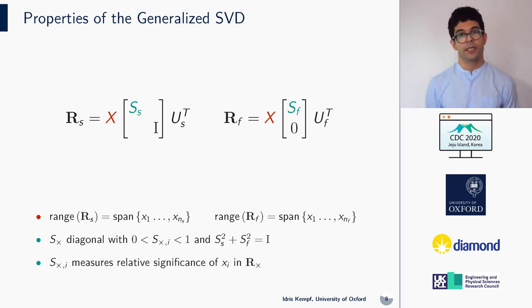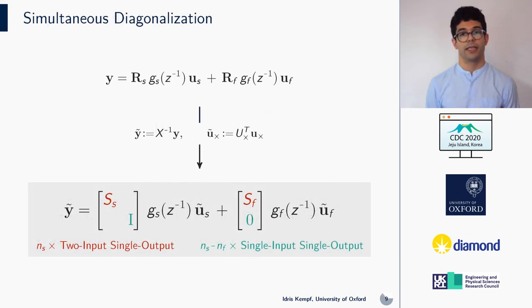The immediate benefit is that we can use the GSVD to diagonalize our system. By inserting the factorizations of RS and RF, defining the transformed variables using the tilde notation, we end up with the system at the bottom, which is diagonal. The MIMO system has now been mapped to a set of two input single output systems and another set of SISO systems. We will use this diagonalized system to design a controller.